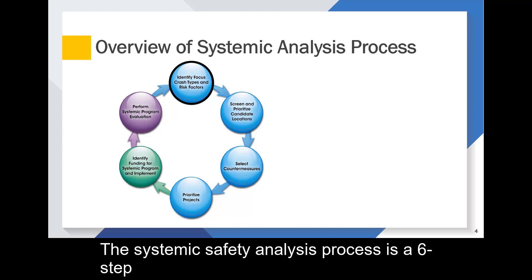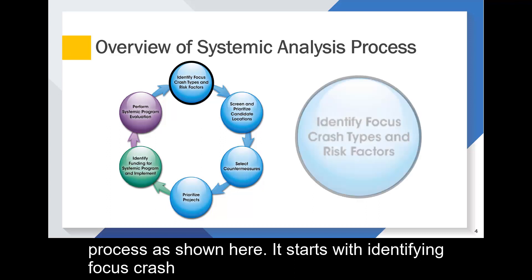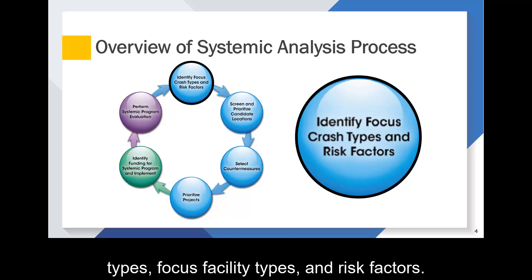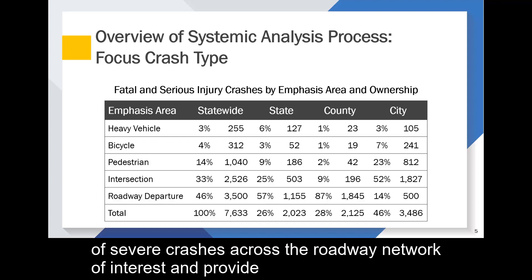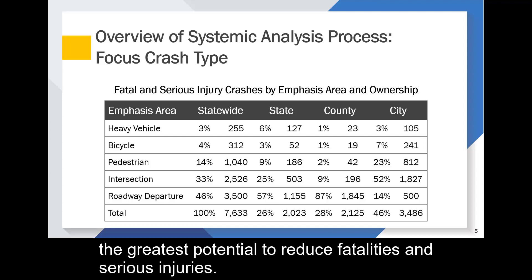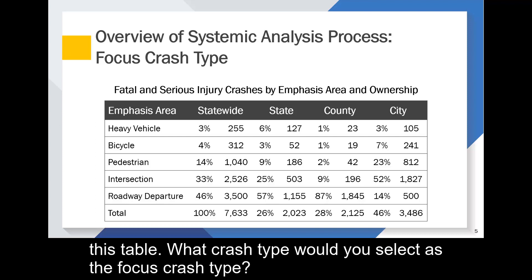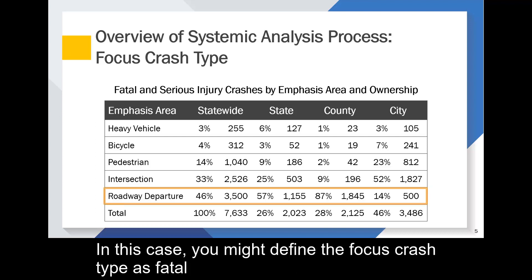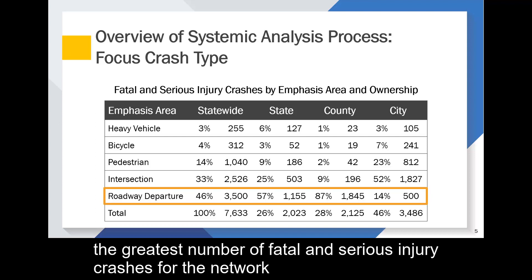The systemic safety analysis process is a six-step process. It starts with identifying focus crash types, focus facility types, and risk factors. Focus crash types typically represent the greatest number of severe crashes across the roadway network of interest and provide the greatest potential to reduce fatalities and serious injuries. Take a moment to pause the video and review the data in this table. What crash type would you select as the focus crash type? In this case, you might define the focus crash type as fatal and serious injury roadway departure crashes because it represents the greatest number of fatal and serious injury crashes for the network of interest.